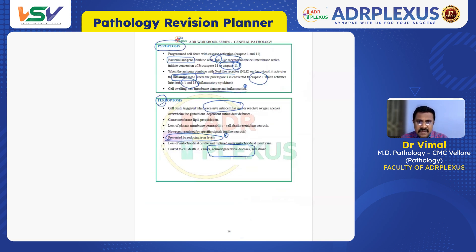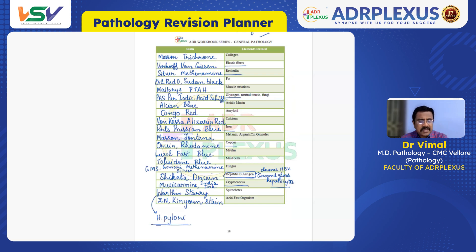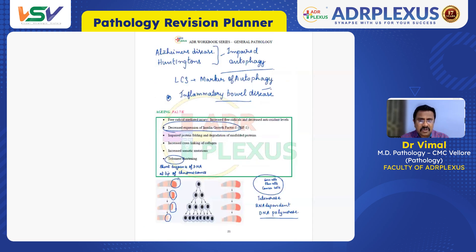In the first revision, concentrate more on apoptosis and pigments — especially the lipofuscin pigment. The tabular column on pigments is crucial because you will revisit it in the first, second, and third revisions — even in the last minute before the exam, you need to go through this table covering stains and substances. Also cover calcification and autophagy — for example, impaired autophagy in Alzheimer's and Huntington's disease, and LC3 as a marker of autophagy. Highlight LC3 in a separate color as you'll need it in the third revision too.